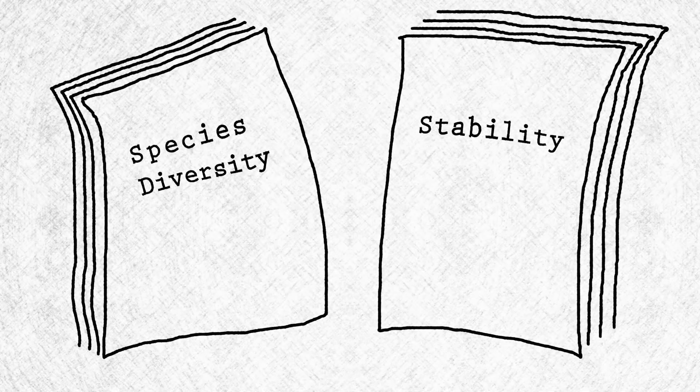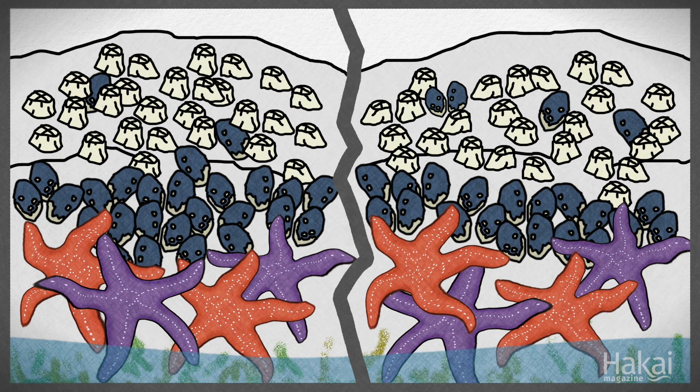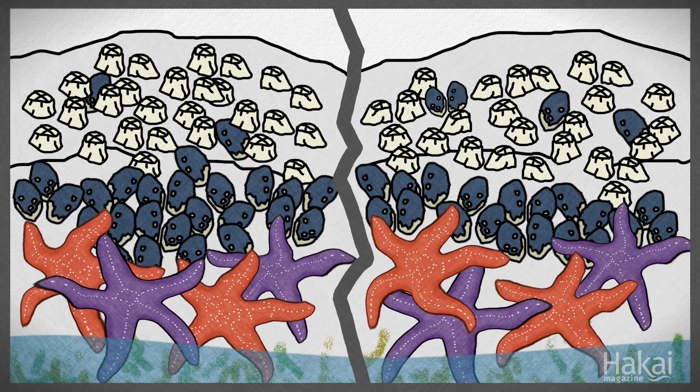And my idea was to start from the top down, removing predators, to see how that changed the status of the system. And so in 1963, I began my now infamous starfish removal, which led to the keystone species idea.